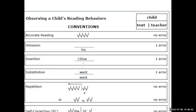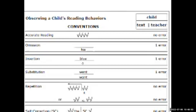Sometimes they'll do just the opposite — they'll add in a word when nothing should be there. What the child said is on top; what they should have said was nothing, so there's just a blank line. That's a scorable error. Substituting is literally this: what the child said on top, what they should have said on the bottom. In this example, 'went' instead of 'want' — that is a scorable error for substitution.